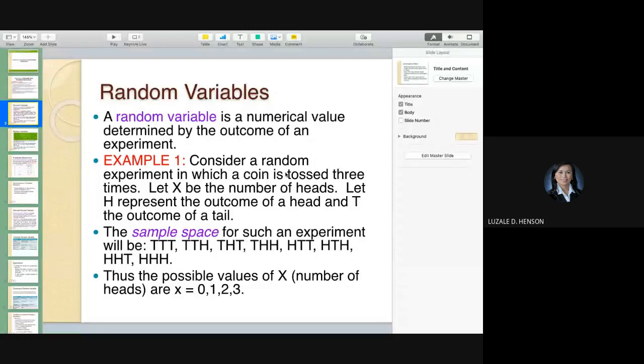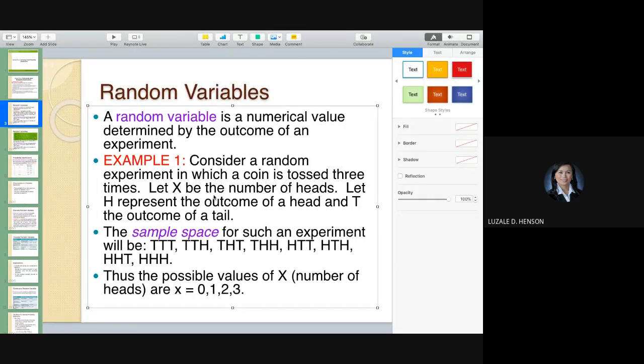Example, consider a random experiment in which a coin is tossed three times. So let X be the number of heads. That's your interest. You're watching how many heads will appear as you toss the coin three times successively. So we have a sample space for the first tossing of a coin. You may get a tail or a head. Second, maybe a tail or head.